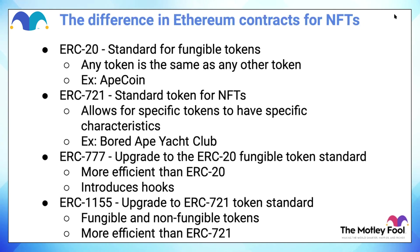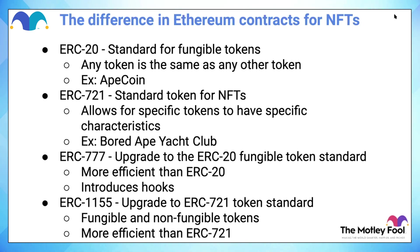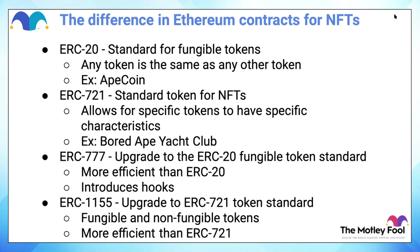Bored Ape Yacht Club is another good example of ERC-721 tokens. I'm going to put both of those token addresses in the Slido if you want to go straight to the source and see what these contracts look like. You can see transactions — this is where, if you haven't looked on Etherscan, you can see everything that goes on in the blockchain. It's not going to have someone's name next to it, but it'll have an address, and in theory you can track that money in those transactions.